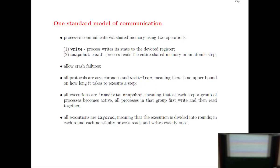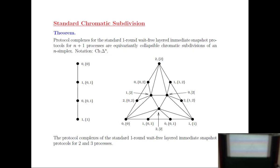This gets you to a clean picture. Whatever model you specify, through this simplicial machinery you will have a model for it. And what do you get out in the end? In the end, the protocol complex will just be a subdivision of a simplex — what we now call standard chromatic subdivision. That's a nice construction which is also quite useful otherwise.